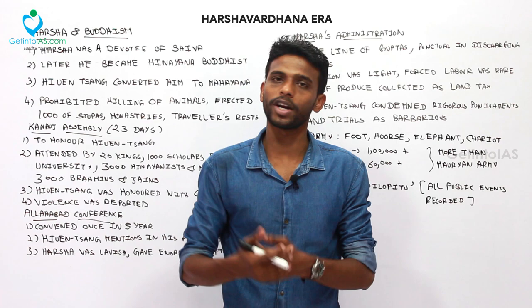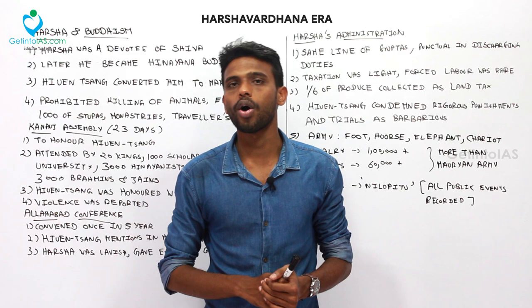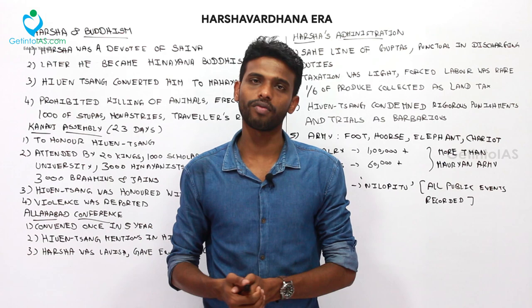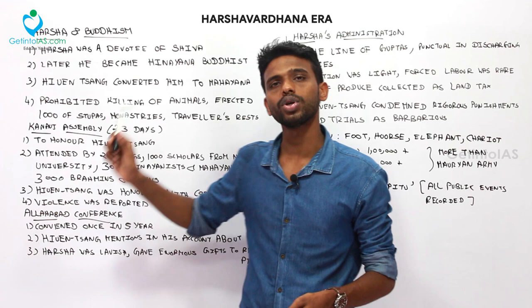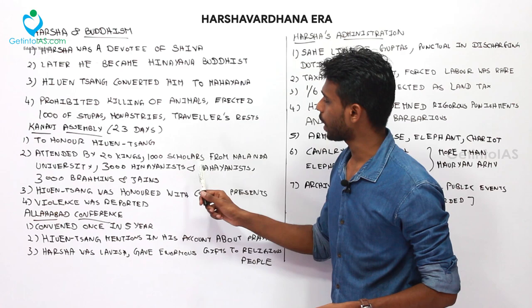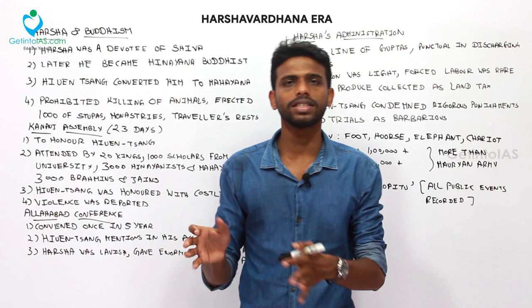Now coming to the Kanauj Assembly. This assembly was held to honor Xuanzang at the close of his stay in Harsha's empire. The assembly lasted for 23 days and was attended by 20 kings, 1,000 scholars from Nalanda University, 3,000 Hinayanists and Mahayanists, and 3,000 Brahmins and Jains — showing that Harsha was tolerant of all religions.